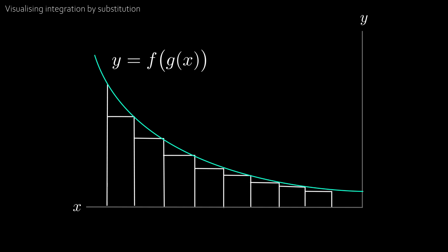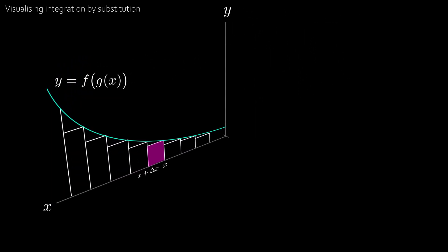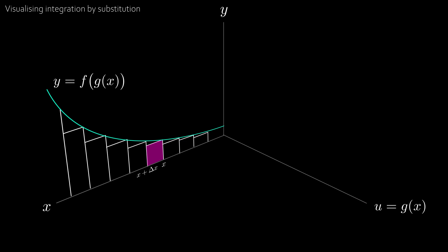We're going to focus on one thin rectangle between x and x plus delta x, where delta x is some small change in x. Now let's create a third axis, the u axis, where u equals g of x.